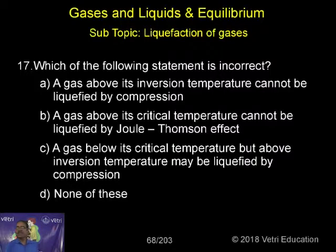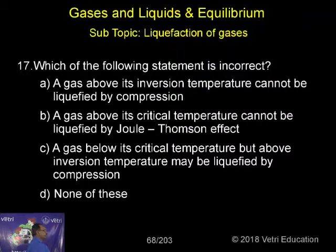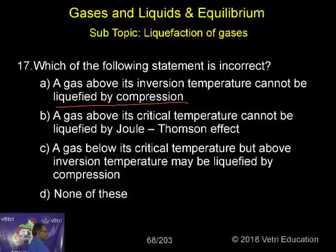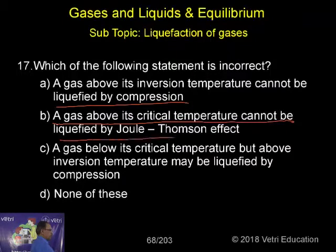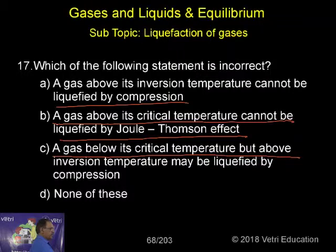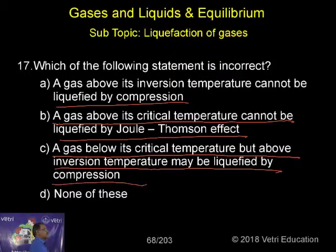Now go to number 17. Which of the following statements is incorrect? A: A gas above its inversion temperature cannot be liquefied by compression. B: A gas above its critical temperature cannot be liquefied by Joule-Thompson. C: A gas below its critical temperature but above inversion temperature may be liquefied by compression. D: None of these.